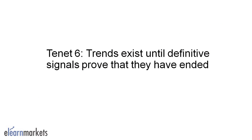Finally, we have Tenet 6, which says that trends exist until definitive signals prove that they have ended. Charles Dow believed that trends existed despite market noise. Markets might temporarily move in the direction opposite to the trend, but they will soon resume the prior move. The trend should be given the benefit of the doubt during these reversals. Determining whether a reversal is the start of a new trend or a temporary movement in the current period is not easy. Hence, Dow theorists often disagree in this determination. Technical analysis tools attempt to clarify this, and this can be interpreted differently by different investors.